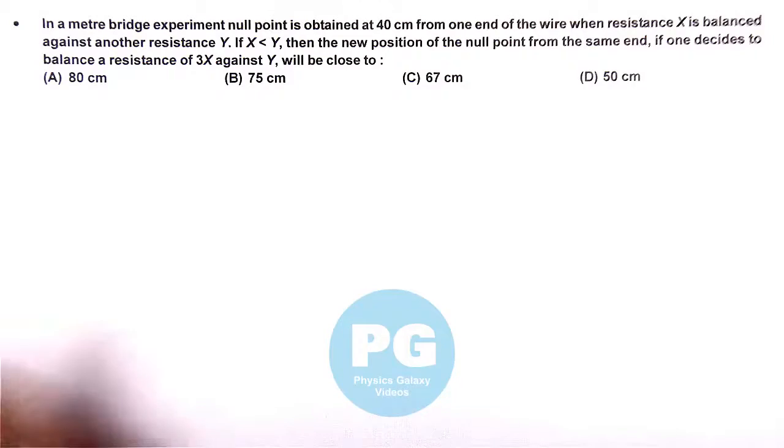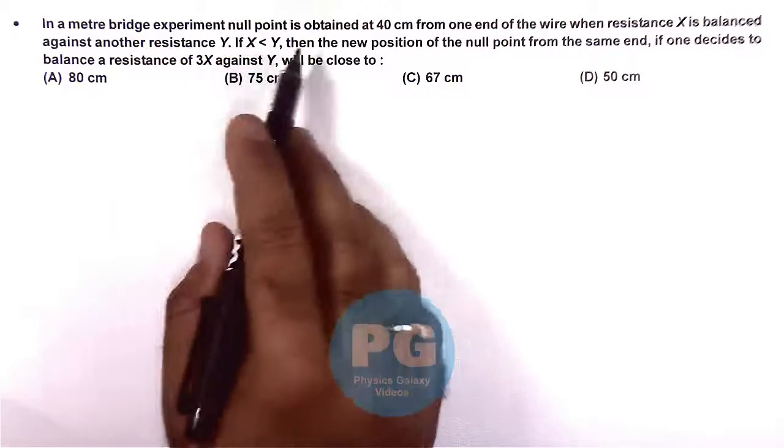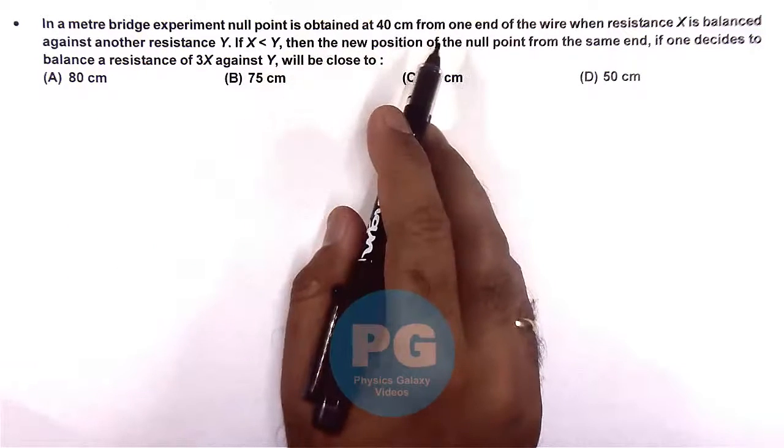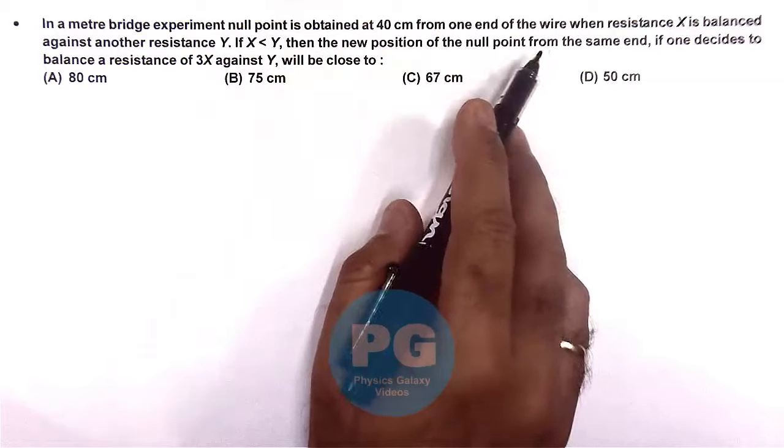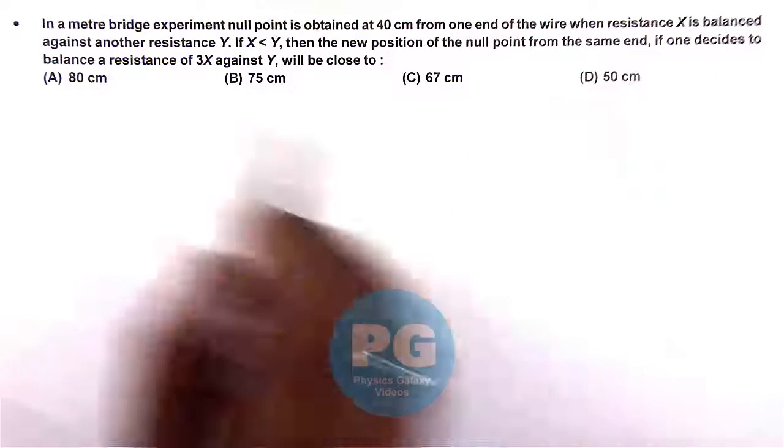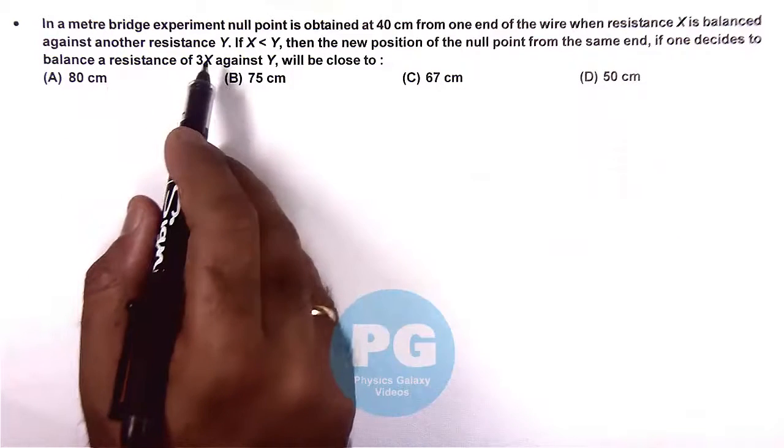In this question we are given that in a meter bridge experiment null point is obtained at 40 centimeters from one end of the wire, when resistance x is balanced against another resistance y.